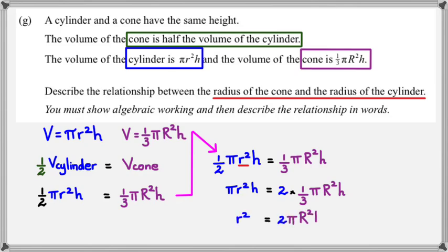So r² would equal 2πR²h divided by 3πh. And of course the πh and the πh will cancel out each other, and you'd have 2R² divided by 3.